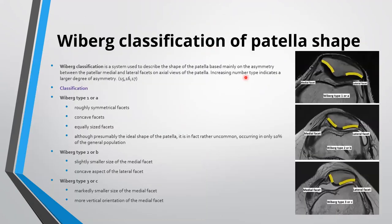Another classification is the Weber classification of patellar shape, which describes the asymmetry between the patellar medial and lateral facets on axial views. Increasing number types indicate a larger degree of asymmetry. In type I, there are roughly symmetrical, concave, equal-sized facets, considered the ideal shape but occurring in only 10% of the general population. In type II, there is a slightly smaller medial facet with a concave-shaped lateral facet. In type III Weber, the medial facet is markedly smaller and more vertically oriented, representing maximum asymmetry.